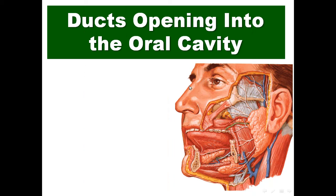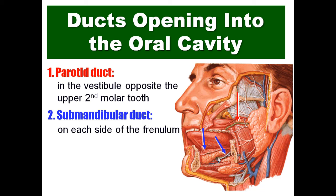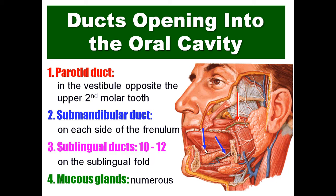Regarding the glands which open into the oral cavity: the first is the parotid duct, which opens in the vestibule of the mouth opposite the upper second molar tooth. The second is the submandibular duct, which opens on each side of the frenulum of the tongue. Then the sublingual ducts — from 10 to 12 — open on the sublingual fold, and there are numerous mucous glands.